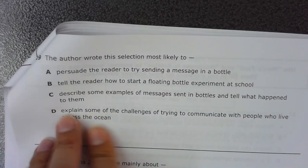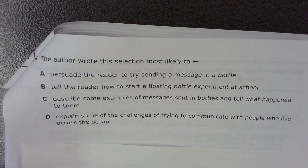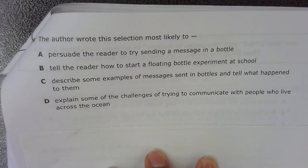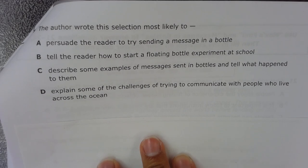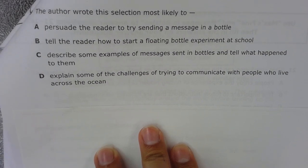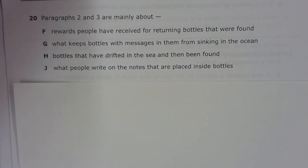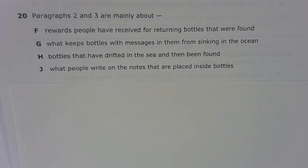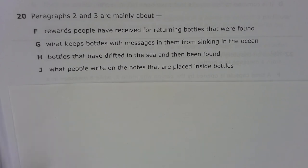Number 19. The author wrote this selection most likely to A. Persuade the reader to try sending a message in a bottle. B. Tell the reader how to start a floating bottle experiment at school. C. Describe some examples of messages sent in bottles and tell what happened to them. D. Explain some of the challenges of trying to communicate with people who live across the ocean. Number 20. Paragraphs two and three are mainly about F. Rewards people have received for returning bottles that were found. G. What keeps bottles with messages in them from sinking in the ocean. H. Bottles that have drifted in the sea and then been found. J. What people write on the notes that are placed inside bottles.